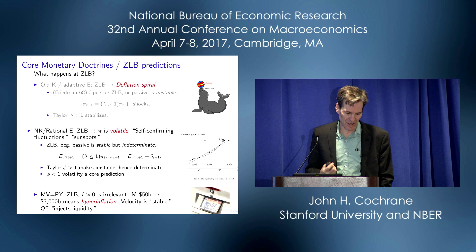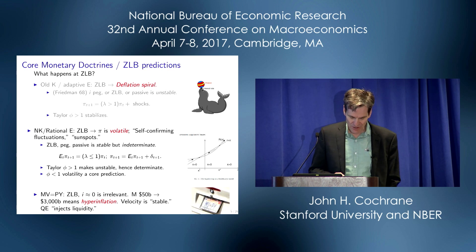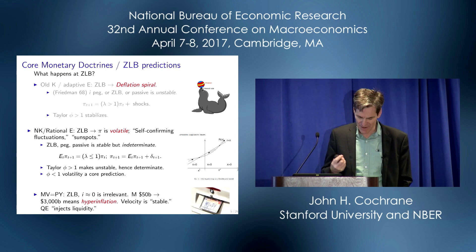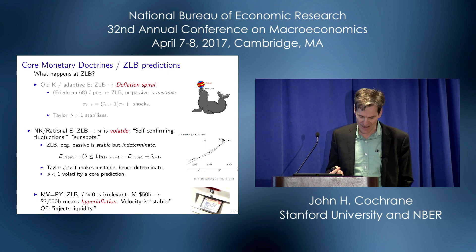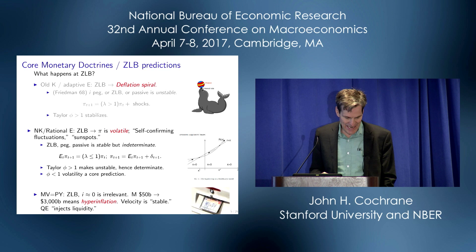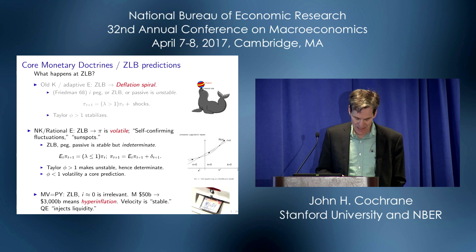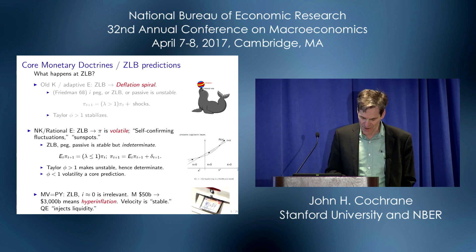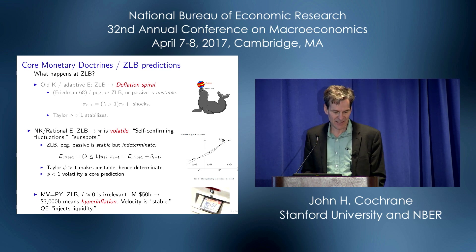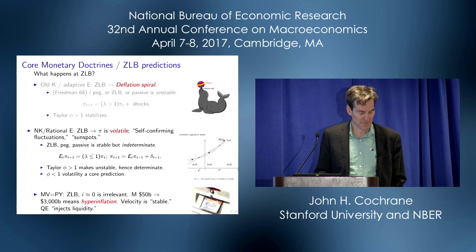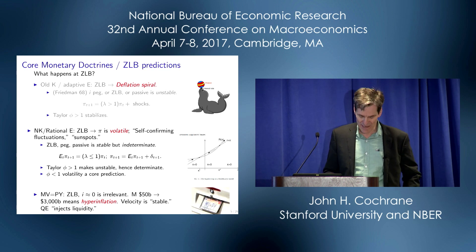This is a core prediction of New Keynesian thought. Clarida, Galli, and Gertler wrote perhaps the most important empirical paper in this literature. Inflation in the 1970s was volatile because passive policy led to self-confirming volatility. Inflation became quiet in the 1980s because of active policy. For 20 years, a vast New Keynesian liquidity trap literature has predicted that the zero bound would generate sunspot volatility. So if you throw away the prediction that passive policy leads to volatility, you have to throw away the theory's central empirical success and 20 years of its work as well.